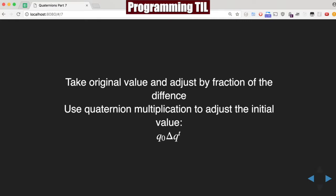Finally, we want to take the original and adjust by the fraction, and so we'll use quaternion multiplication to adjust the initial by the delta.